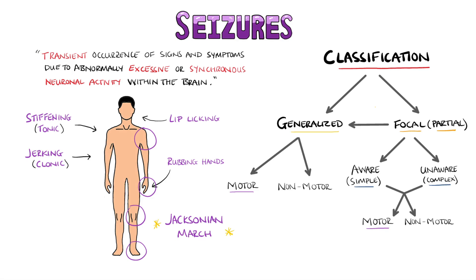Generalised non-motor seizures are mostly known as absence seizures, where primarily individuals will have changes in awareness and stare. Focal non-motor seizures typically have other symptoms that happen first, previously known as an aura. This could be changes in sensation, emotion, thinking or experiences.